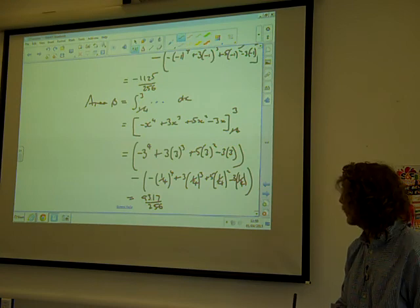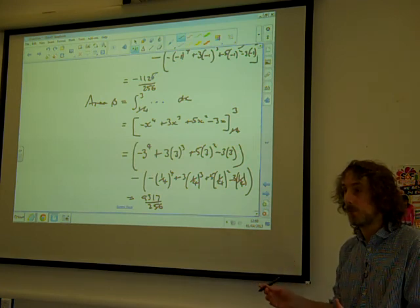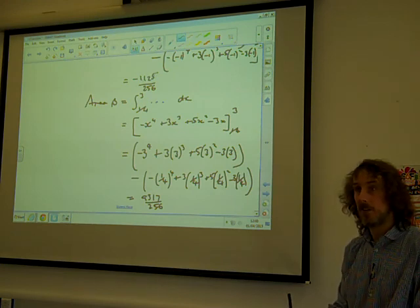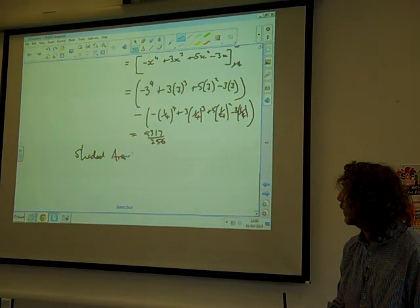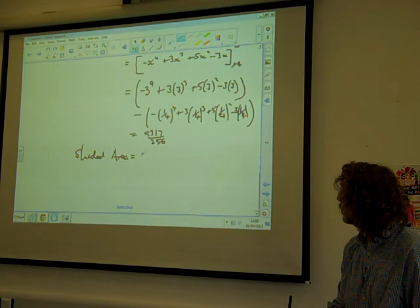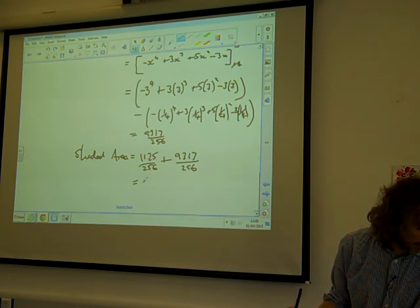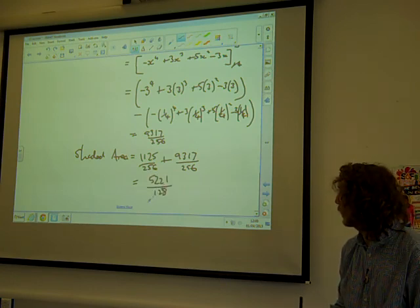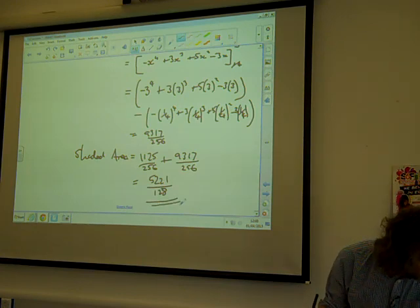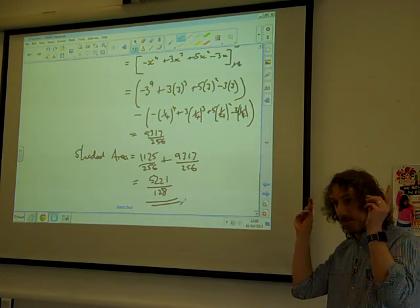So we've now got our two areas, 9317/256 and a much smaller negative area. But remember, in order to get the total area that is shaded in that diagram, we need to ignore that minus sign because it's only a minus sign because it's underneath the x-axis. So the shaded area is 1125/256 + 9317/256, and the answer to that is 5221/128. If you do a decimal equivalent, that would still be right. There we go. And dead on 12 o'clock, that is maths.